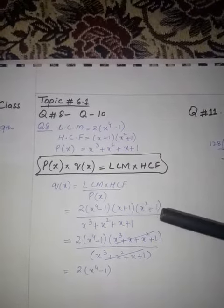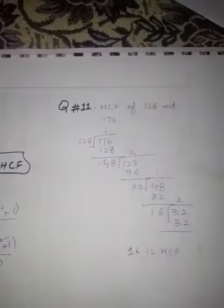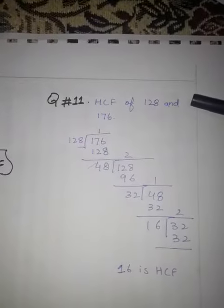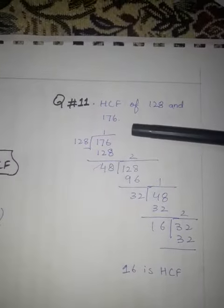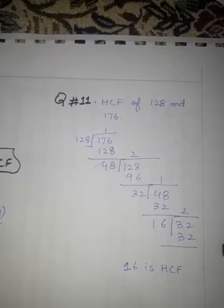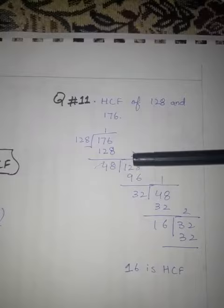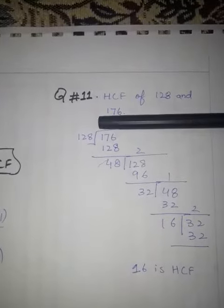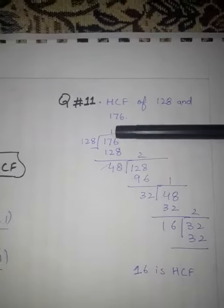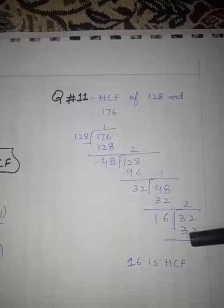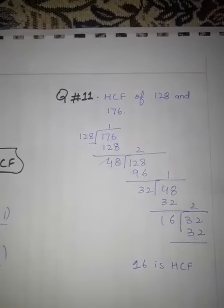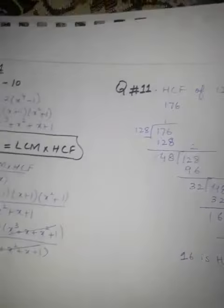Question number 11: find HCF of 128 and 176. This is a whole process, you know that the long division, how can we do this. 176 inside and 128 outside, one by one division method is applied, then at last 16 is HCF.